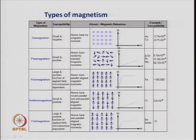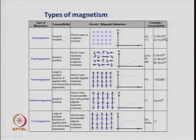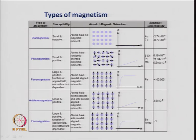In paramagnetism, the susceptibility is small but positive. There are dipoles on the atoms, but they are all randomly oriented. When you apply a field, they start aligning, so the magnetization increases as a function of magnetic field. For zero magnetic field they are all disordered; as you increase the magnetic field the value increases. These values are positive but not very large for these metals.